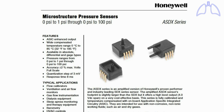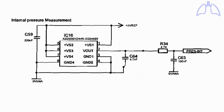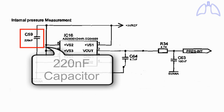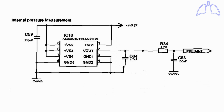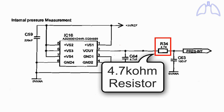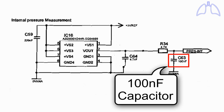You can download its data sheet from the description of this video. The circuit of pressure sensing is very simple. This is the pressure sensor. 220 nanofarad capacitor, 4.7 nanofarad capacitor, 4.7 kilo ohm resistor, 4.7 kilo ohm resistor, 100 nanofarad capacitor.